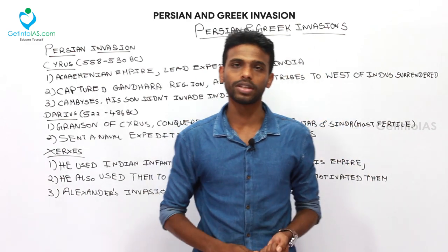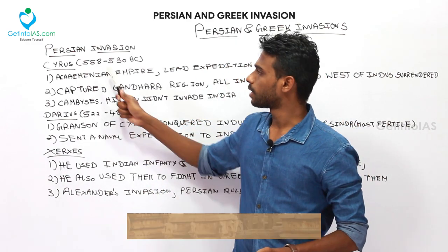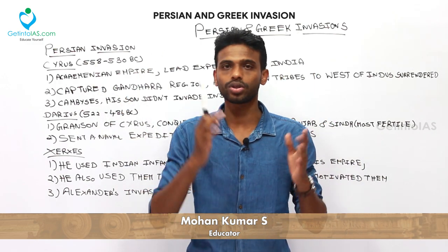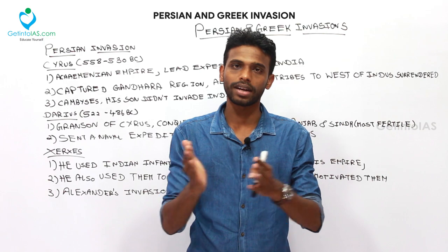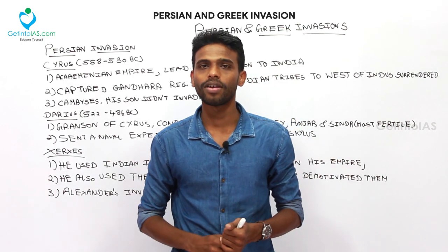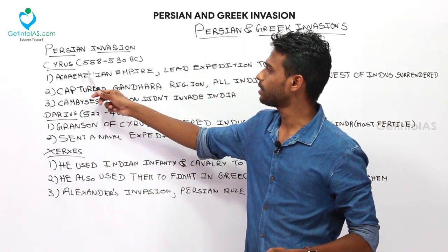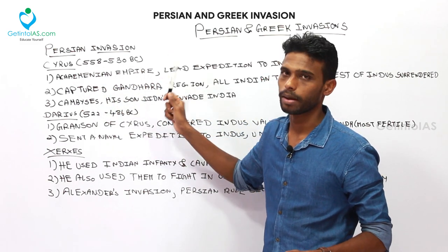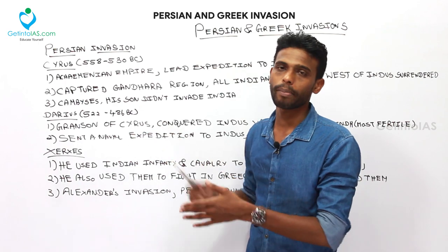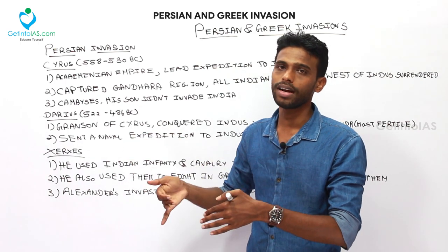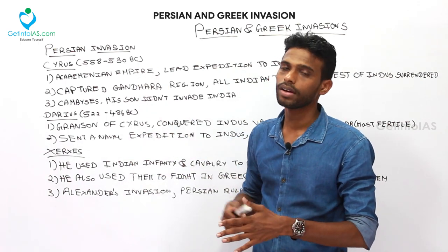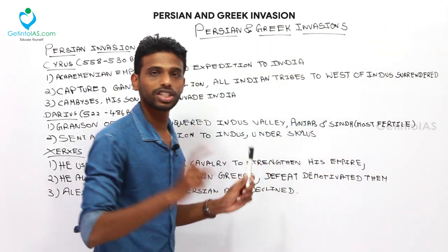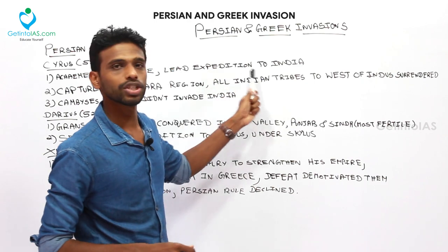Now we are going to see about Cyrus and his rule period in the Persian Empire. The Persian Empire means present-day Iran, located in the Middle East. Cyrus ruled during 558 to 530 BC and belongs to the Achaemenian Empire. He was the first Persian emperor to lead an expedition to India.